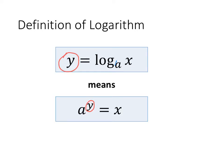The a goes from being the base of the logarithm to the base of the exponential expression. And then the x goes from being inside the logarithm to being by itself on the other side of the exponential equation.